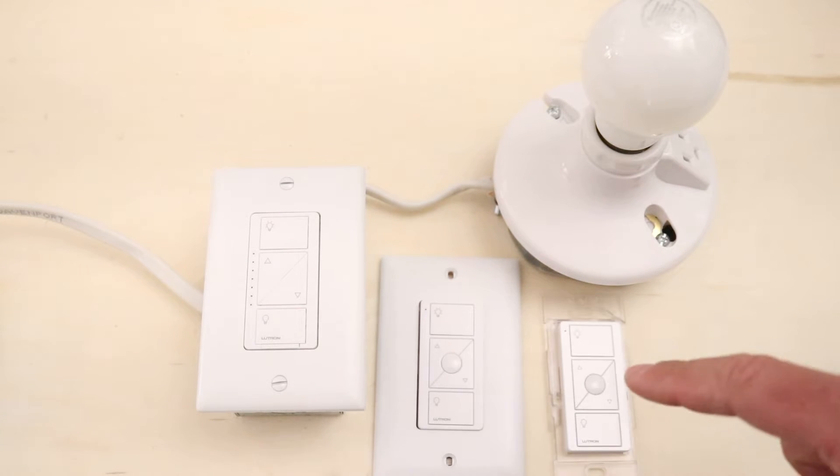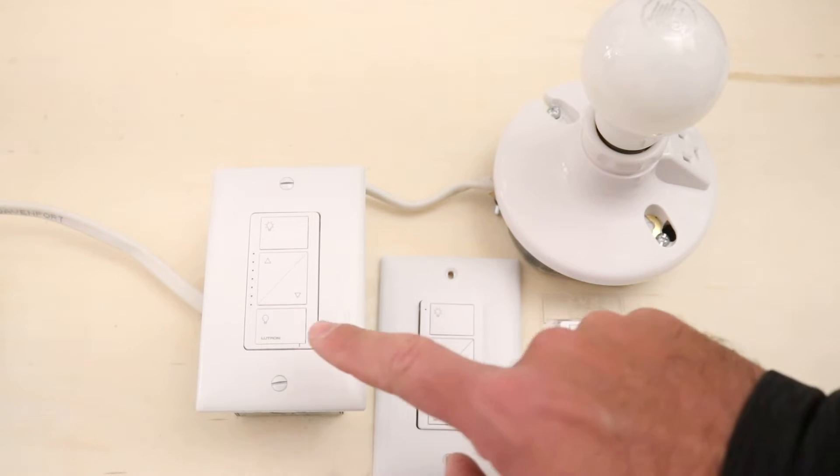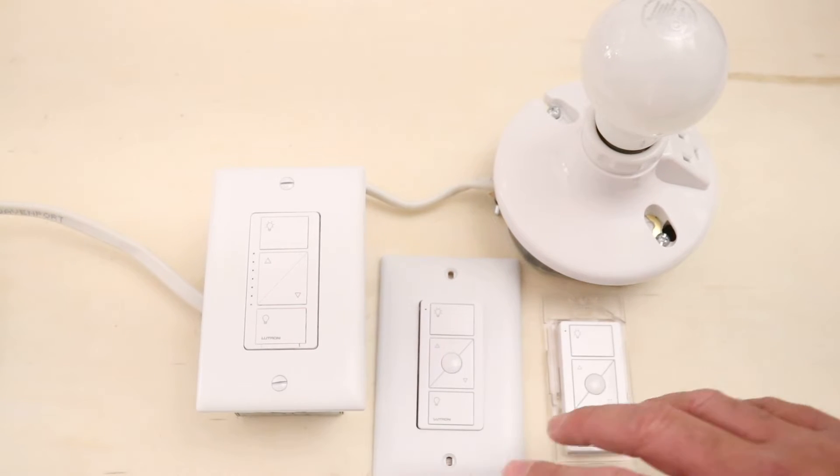A three-way switch is two switches, and a five-way switch would be four switches. So with the Lutron Caseta system, all you need are two pico remotes and a dimmer switch, and then you can make a four-way switch.